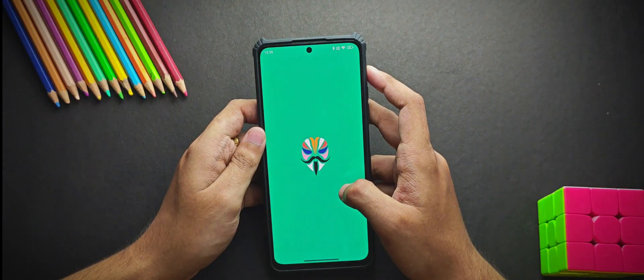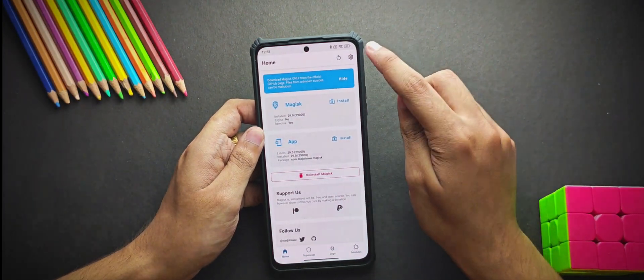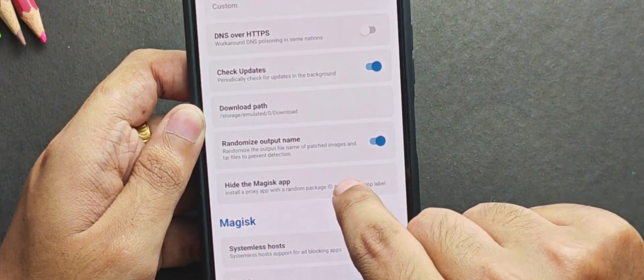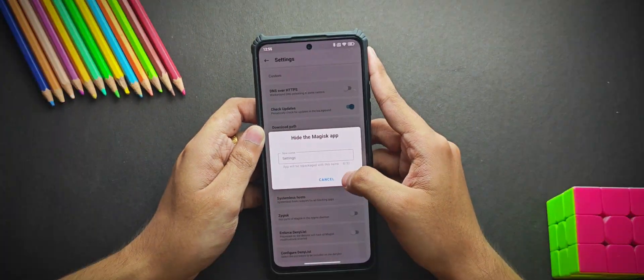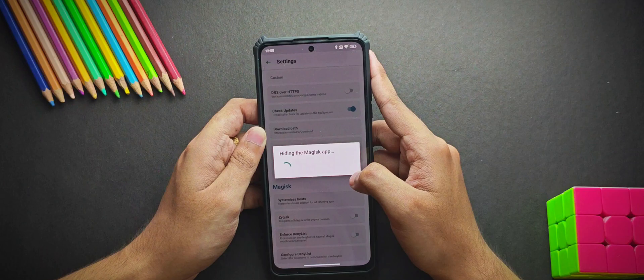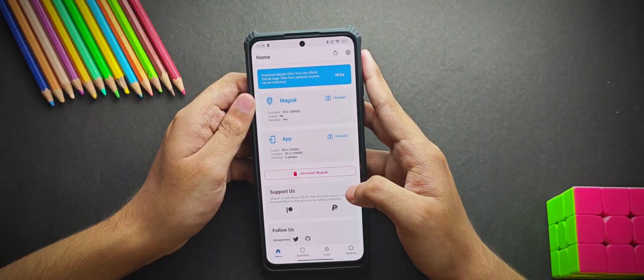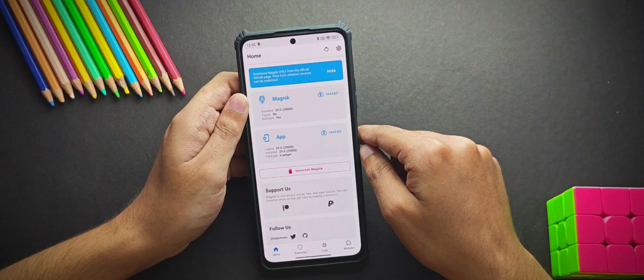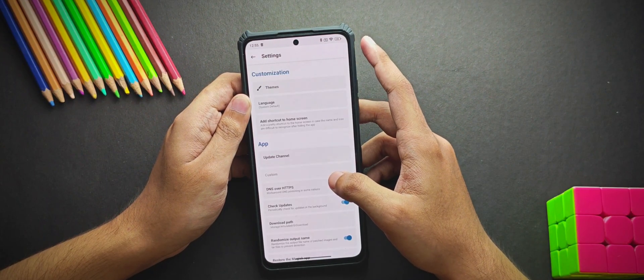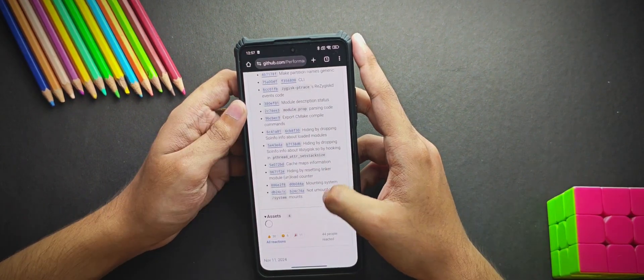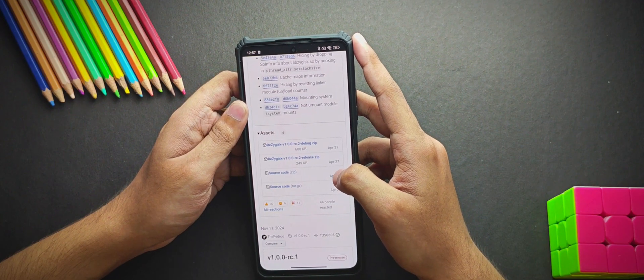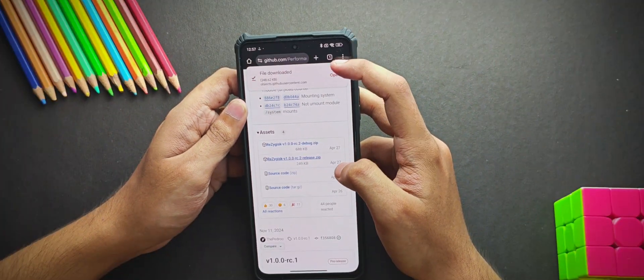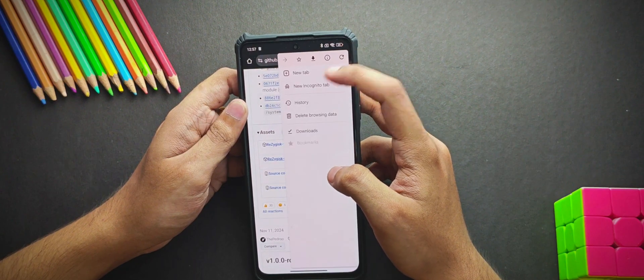Now if you are using Magisk, firstly you will need to open the Magisk app and then move into the app settings and hide the Magisk app from this option. Now once it's done you need to reopen Magisk and from the app settings you need to enable Zygisk. Now if you are using Kernel SU then you will need to flash the ReZygisk module to enable Zygisk and I'll post all the file links in the description so don't worry about it.